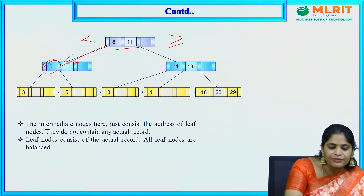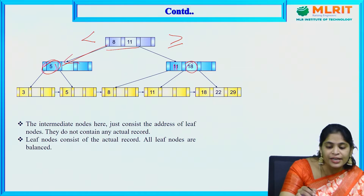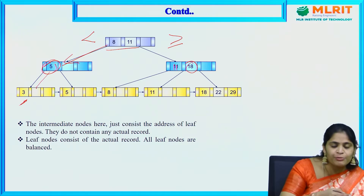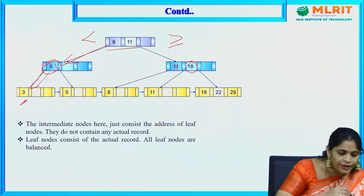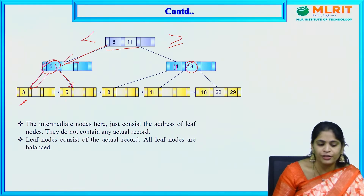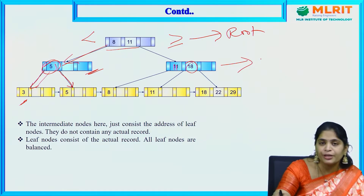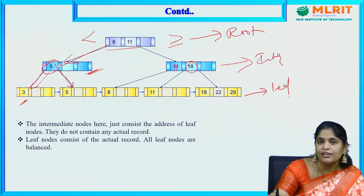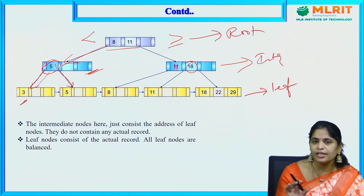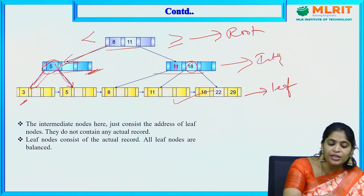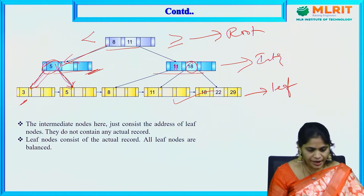The logic we use to place records: elements less than the root go left, elements greater than or equal go right. So 5 is less than 8, placed here; 11 is placed to the right; 18 is greater than 11, placed here; 3 is less than 5, placed to the left of 5. This first node is the root node, the next level are intermediate nodes, and the last level are leaf nodes. The actual data will be present in the leaf nodes, and intermediate nodes act as pointers to these leaf nodes.